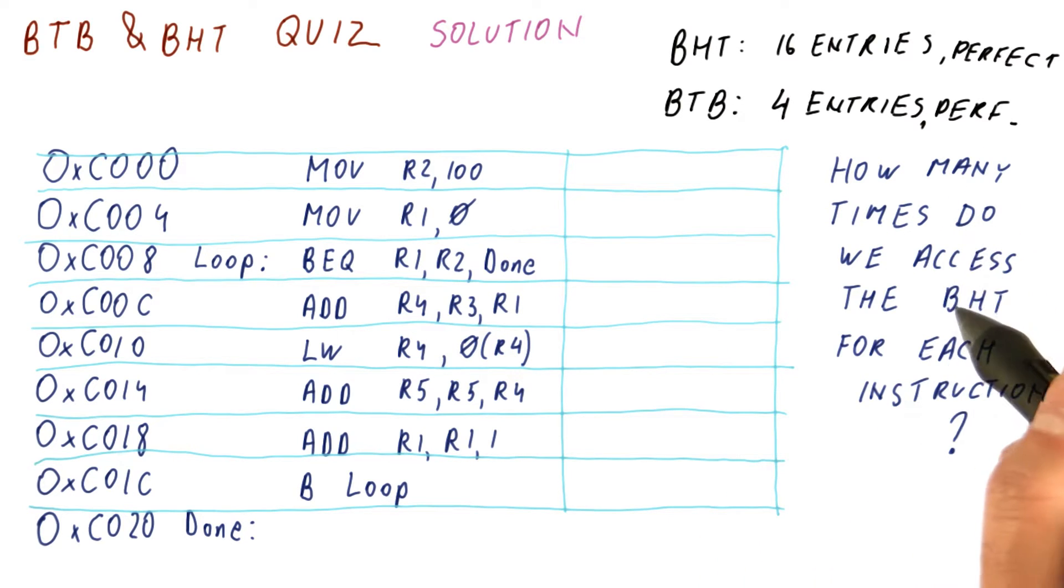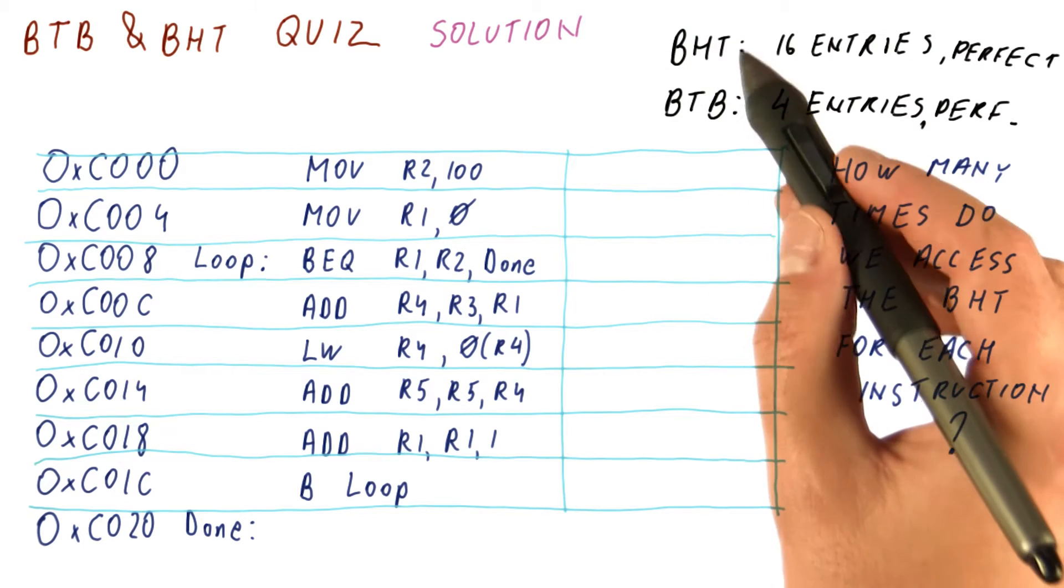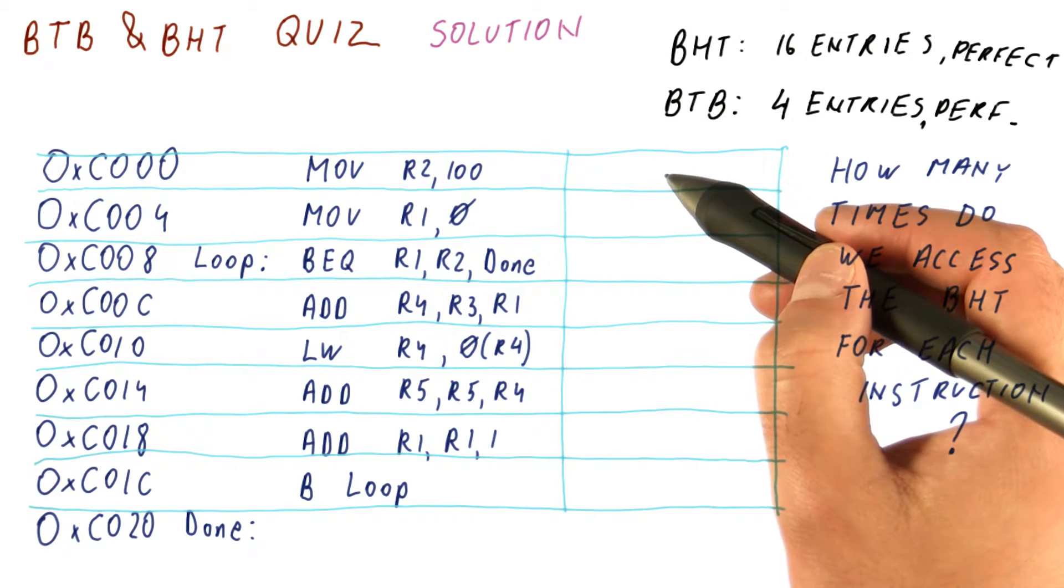The question was, how many times do we access the BHT for each of these instructions? We access the BHT in order to tell us whether this instruction is a taken branch. We do that every time we fetch an instruction.